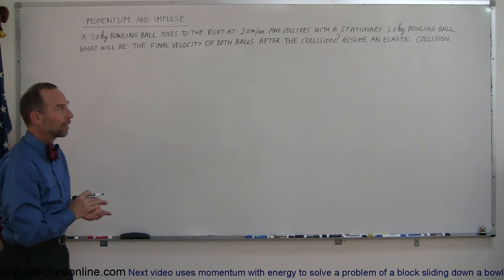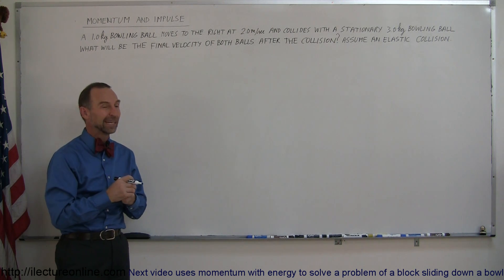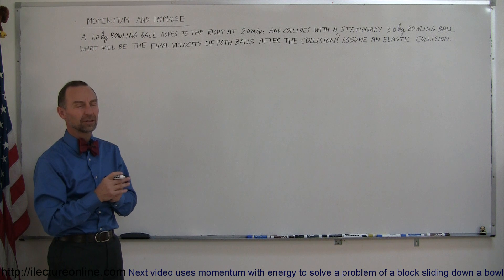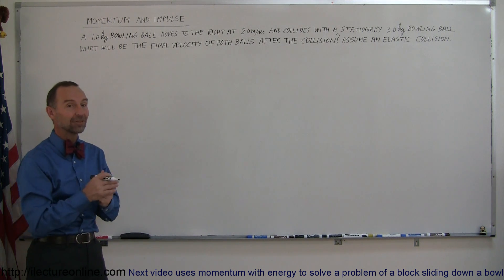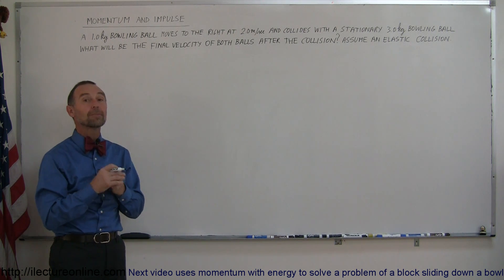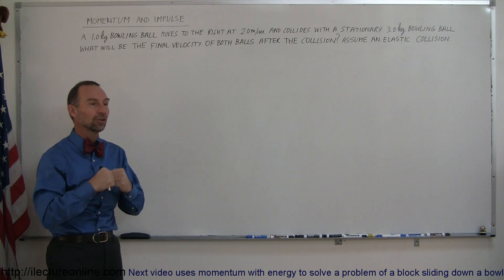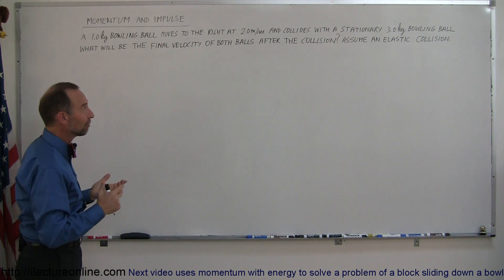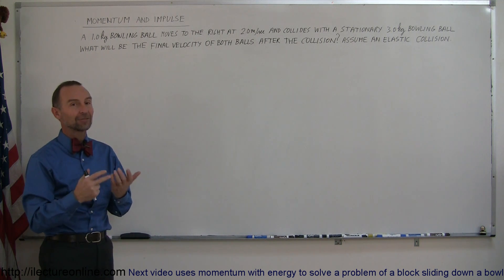In this particular case, we have an elastic collision, which means that the energy is also conserved. In most real collisions, energy is never conserved — that's called an inelastic collision. But here's an example of an elastic collision where energy is conserved as well. An elastic collision also implies that the two objects will not stick together after the collision; they will go their independent ways, so typically we'll have to find both velocities of the two objects after the collision.